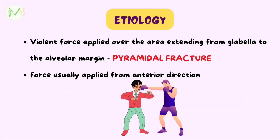The fracture occurs due to violent force delivered at the level of the nasal bone, usually from an anterior direction, sustained by the central region of the middle third of the facial skeleton over an area extending from the glabella to the alveolar margin, resulting in a fracture of a pyramidal shape.